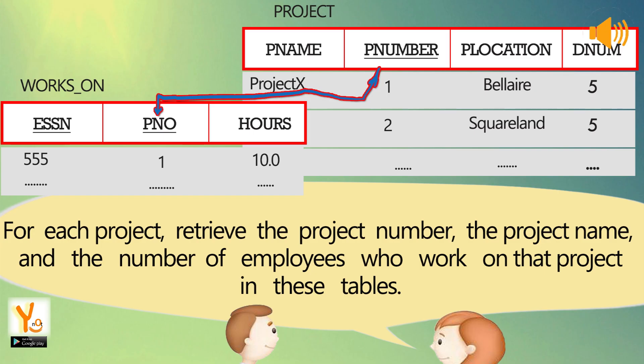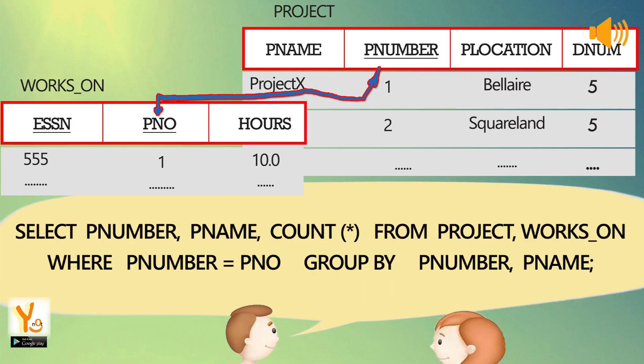For each project, retrieve the project number, the project name, and the number of employees who work on that project. SELECT Pnumber, Pname, COUNT(*) FROM project, works_on WHERE Pnumber = PNO GROUP BY Pnumber, Pname.